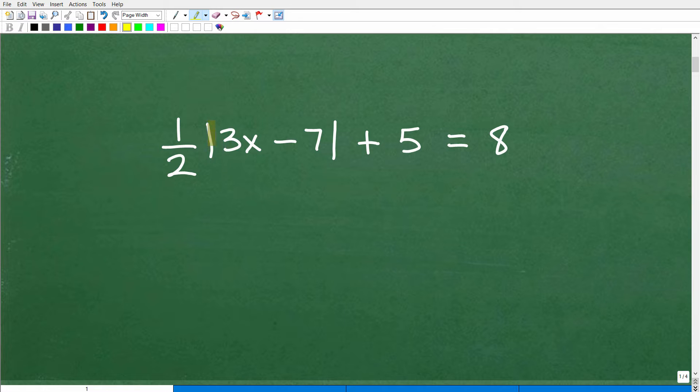So the first thing you want to notice is that these little bars right here indicate that this is an absolute value function. Now here we have an equal sign, so this is an absolute value equation.